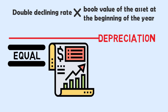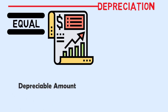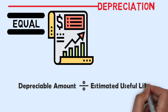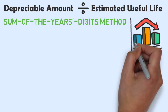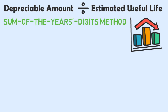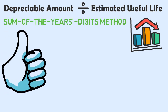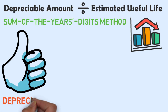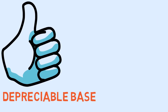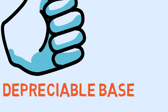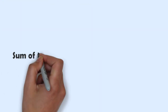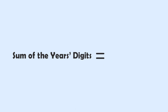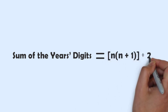Straight-line depreciation is calculated as depreciable amount divided by the estimated useful life. In the sum-of-the-years-digits method, the amount of depreciation to be recorded for any given period is calculated using fractions based on the estimated useful life of the asset. The depreciable base is multiplied by a fraction determined using the useful life. The denominator is the sum of all expected years of life. The sum of the years digits equals n(n+1)/2.